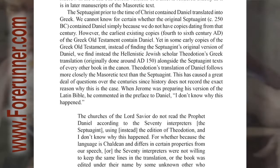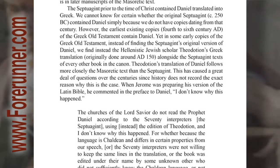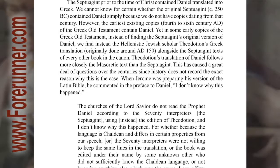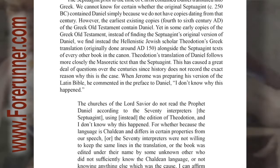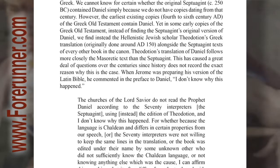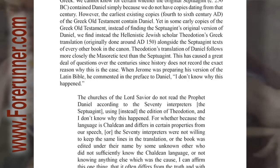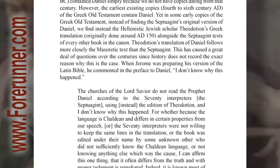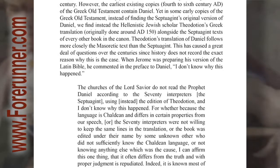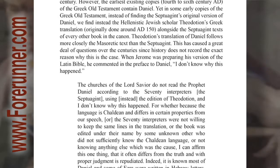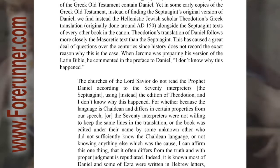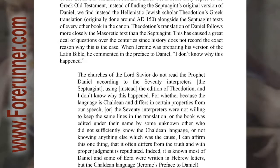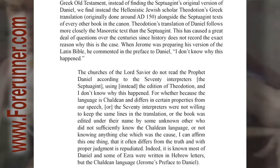Yet in some early copies of the Greek Old Testament, instead of finding the Septuagint's original version of Daniel, we find instead the Hellenistic Jewish scholar Theodotion's Greek translation, originally done around AD 150, alongside the Septuagint texts of every other book in the canon. Theodotion's translation of Daniel follows more closely the Masoretic text than the Septuagint, and this has caused a great deal of questions over the centuries, since history does not record the exact reason why this is the case.